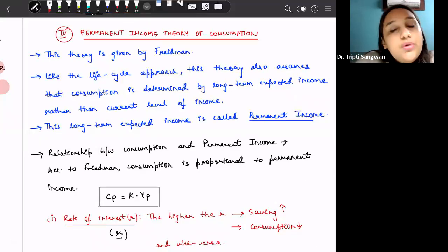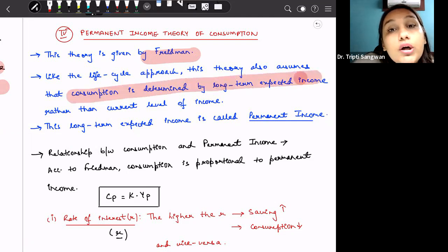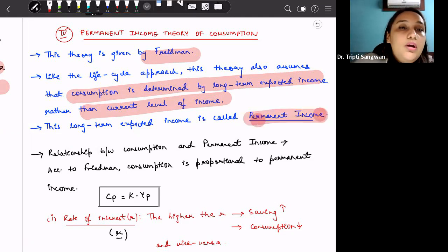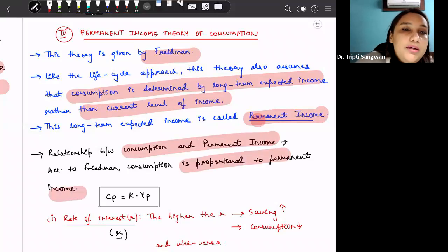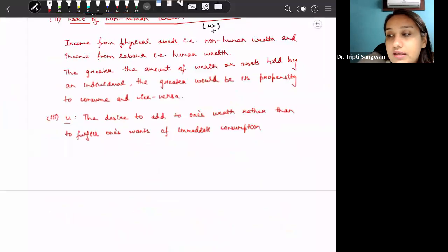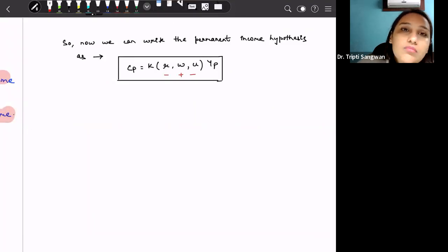Next is permanent income theory of consumption. So this theory was put forward by Friedman. And like the life cycle approach, which was put forward by Modigliani, this theory also assumes that consumption is determined by long term expected income and not just by what is our current level of income. So what is the relationship between consumption and permanent income? According to Friedman, consumption is proportional to permanent income. So here, CP is consumption in current time period, which is a proportion K of our permanent income.